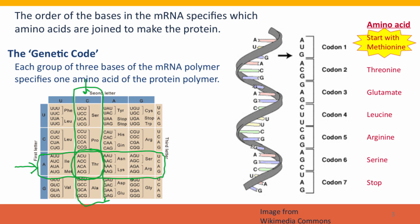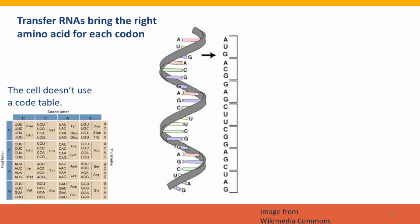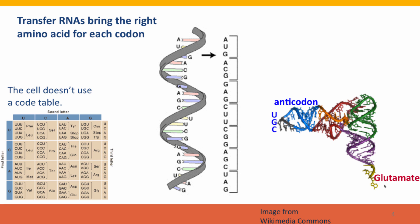Cells don't use a genetic code table — the table is just something that geneticists have come up with. In the cell, the interpretation of the code is done by transfer RNA molecules. Here's our messenger RNA with the division into codons marked off. Here's a typical transfer RNA — transfer RNA glutamate, written as tRNA-glu — and it has a glutamate amino acid attached to one end. This is an RNA molecule, and RNA molecules can fold up so that different parts form base pairs with other parts, creating this complicated structure.